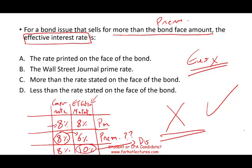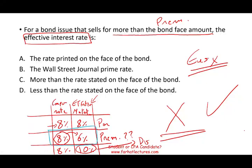So for a bond issue that sells more than the face value, the effective rate must be lower. Notice: to sell at a premium — more than face value — the effective rate must be lower. So the effective rate to sell at a premium, more than face value, must be lower than the stated rate.